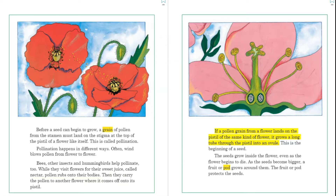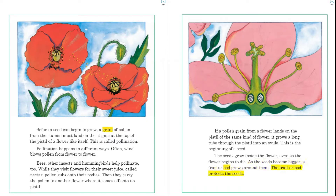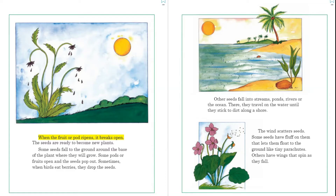When pollen is carried to another flower, it comes off onto its pistil. If a pollen grain from a flower lands on the pistil of the same kind of flower, it grows a long tube through the pistil into an ovule. This is the beginning of a seed. The seeds grow inside the flower, even as the flower begins to die. As the seeds become bigger, a fruit or pod grows around them.